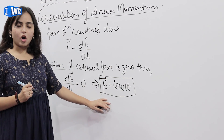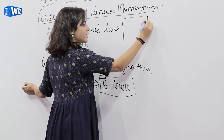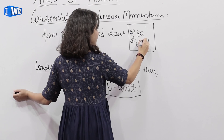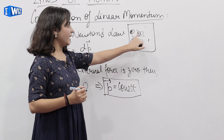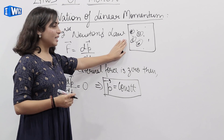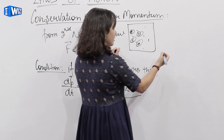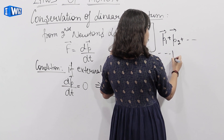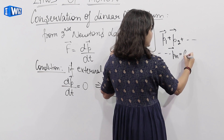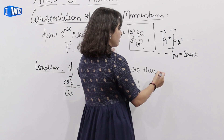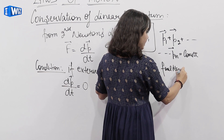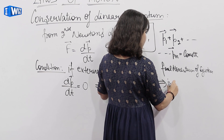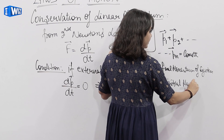P constant हो जाएगा. That means if we have a system of particles a, b, c, d with momenta p1, p2, p3 and there is no external force acting on this system, then momentum p1 of particle a plus p2 of particle b plus up to pn of particle n is constant. That means final momentum of system is equals to initial momentum of system.